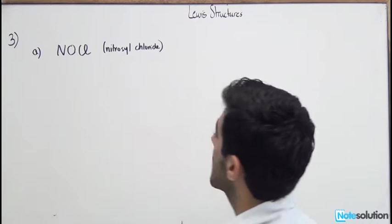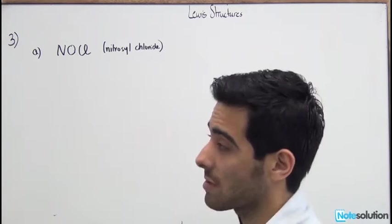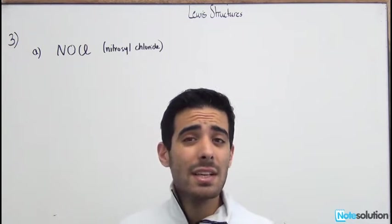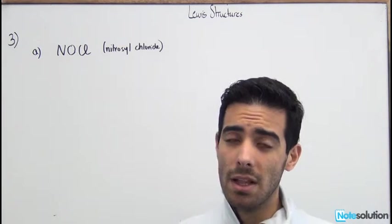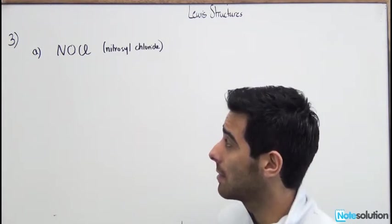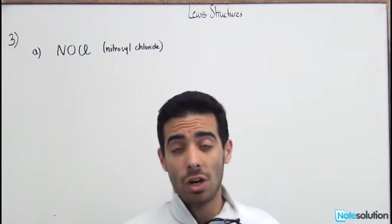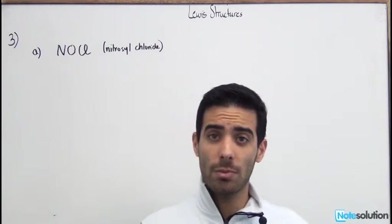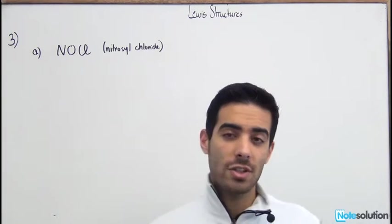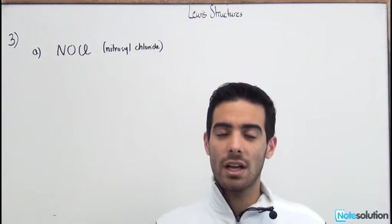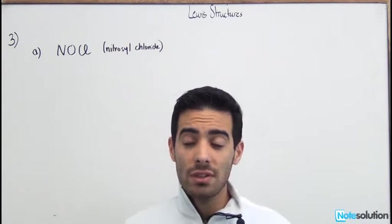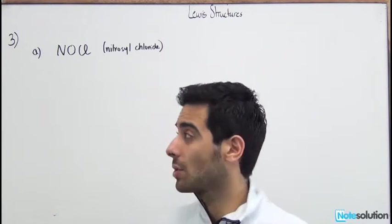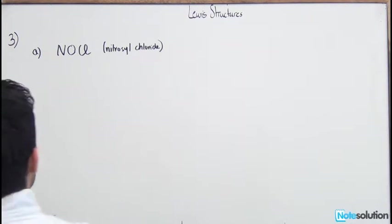In our third example about Lewis structures, we're going to go through a medium-level problem regarding formal charges and how we can use formal charges to decide which is the best structure for a molecule. Formal charges are not just used to calculate charge — we use them to find the most plausible or most acceptable structure for a molecule.